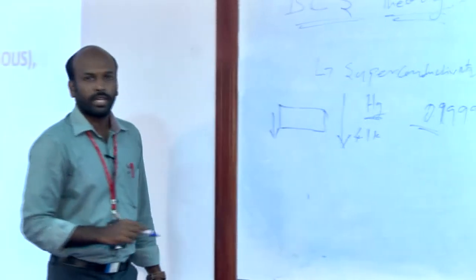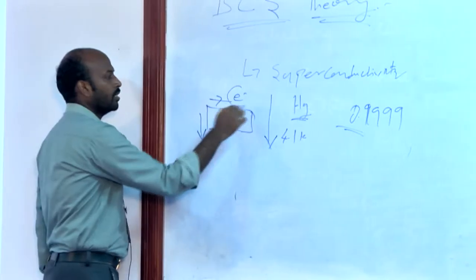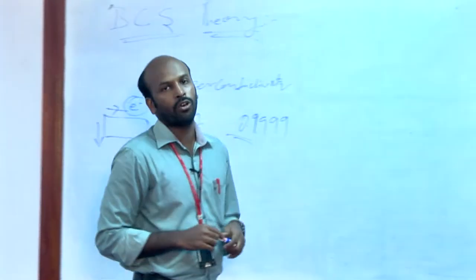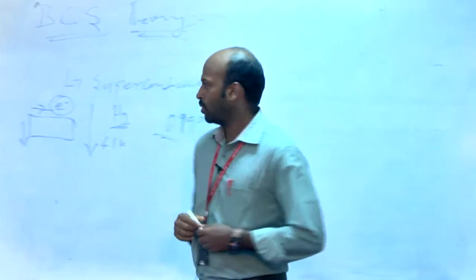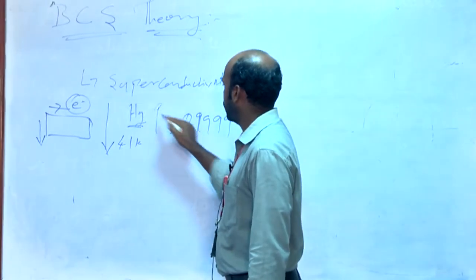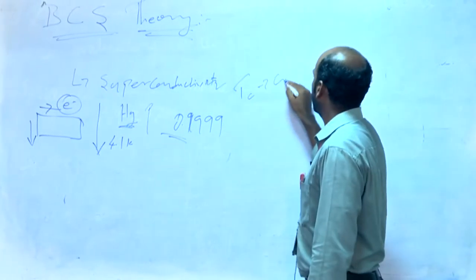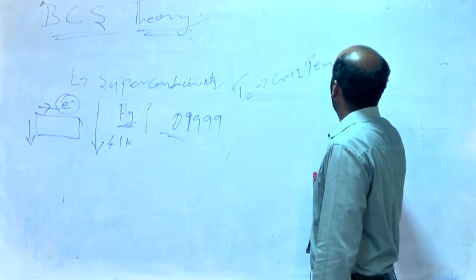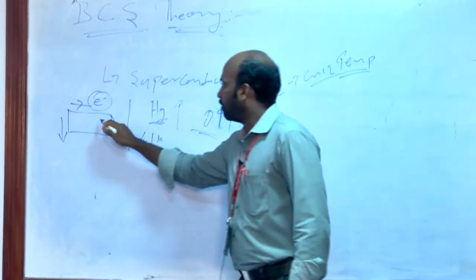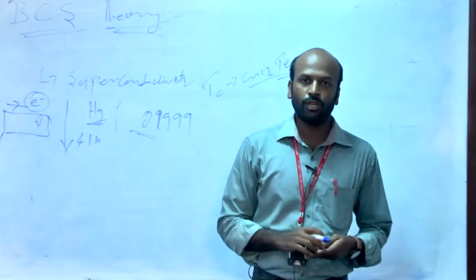So what happens is it conducts electricity completely. Electricity is nothing but the flow of electrons. So automatically, below a critical temperature Tc — what we call the critical temperature — the total resistance of a particular material gets zero.